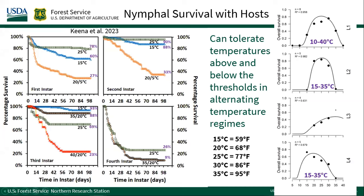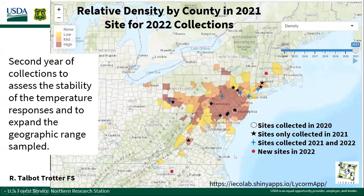At the upper end of the temperature spectrum, response curves drop off very dramatically once you reach the upper threshold, and they may be more sensitive at the upper end of the range. We are continuing this work, collecting from populations further north and further south, and continuing to recollect from previous sites to look at stability and any further variation as this insect moves more north and south. We've also asked — we have found it in temperature zones 5B to 7B — what about plant hardiness zones outside that range?